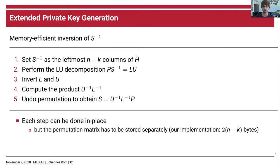The permutation matrix P cannot be stored in place and must be stored externally, but this can be done quite efficiently — our implementation needs an array of 2 times (n minus k) bytes, roughly 1.5 to 3 kilobytes depending on the parameter set. This is the only non-constant memory overhead of the inversion. In the next step, we invert L and U in place: we overwrite L with the inverse of L and U with the inverse of U.